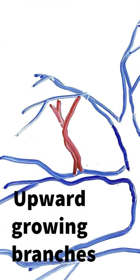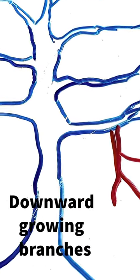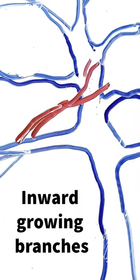Branches growing straight up. Branches growing straight down. Branches growing back towards the trunk.